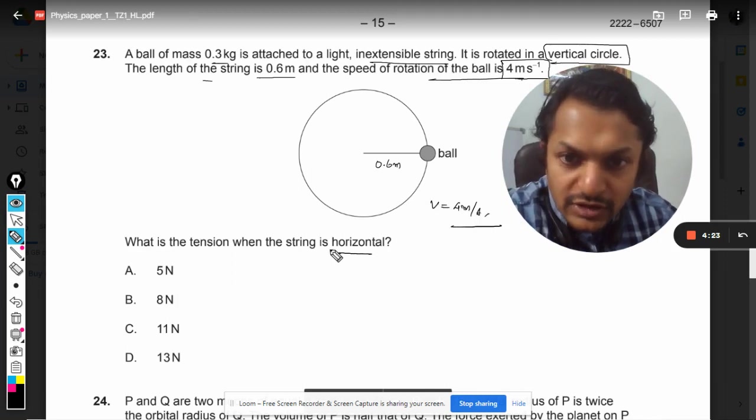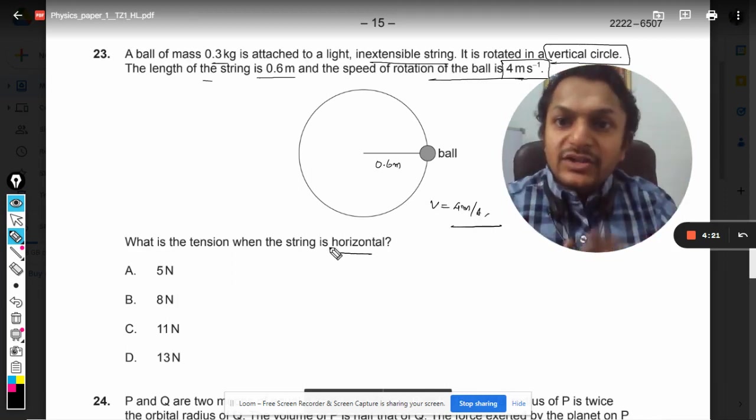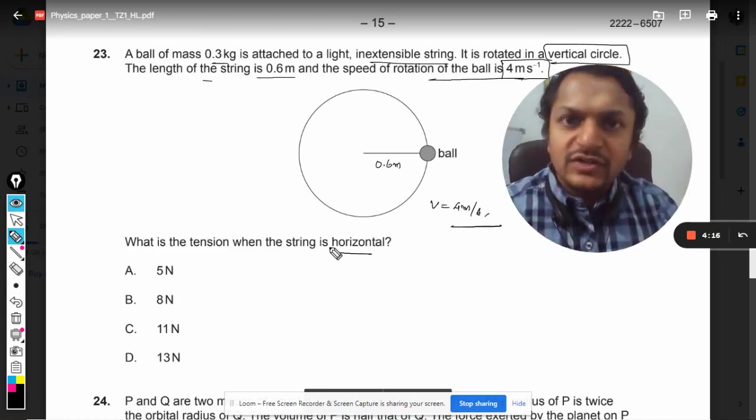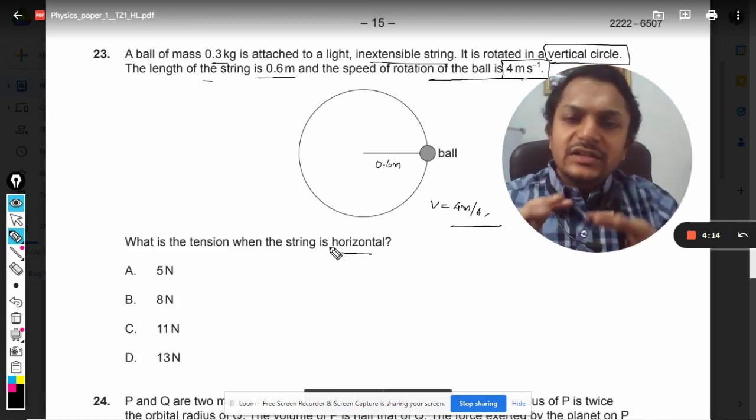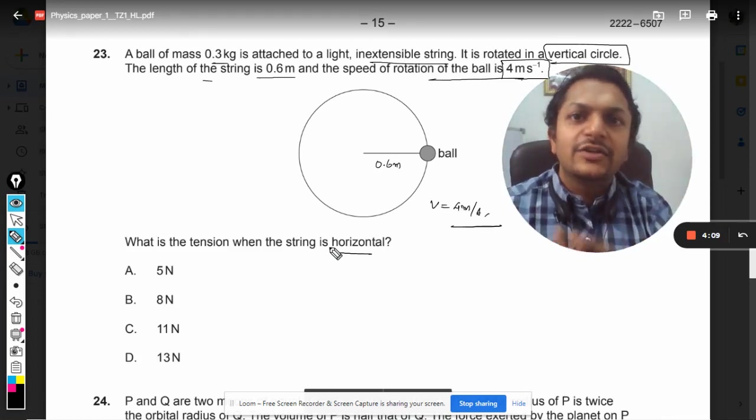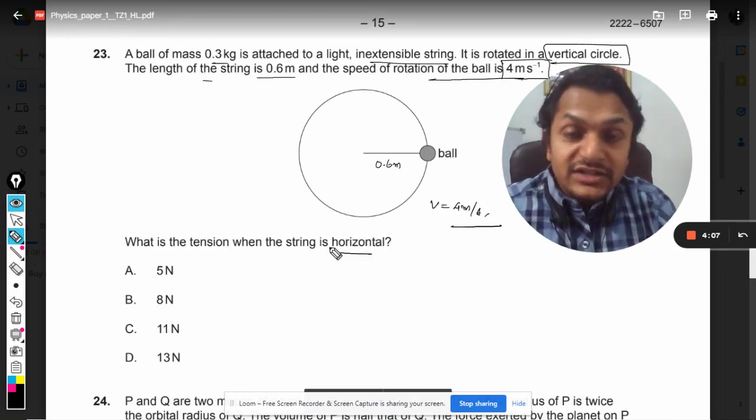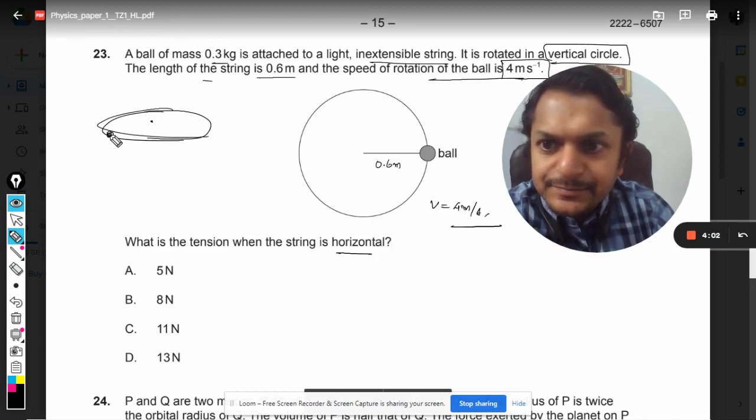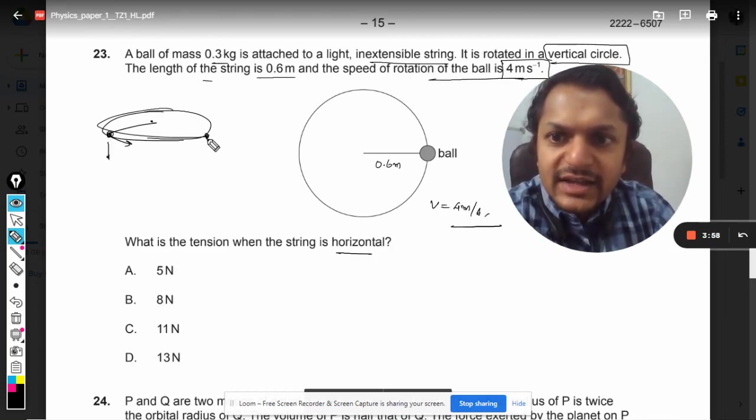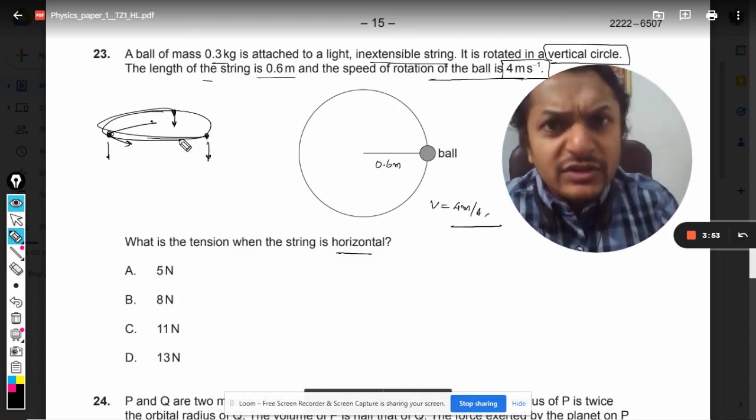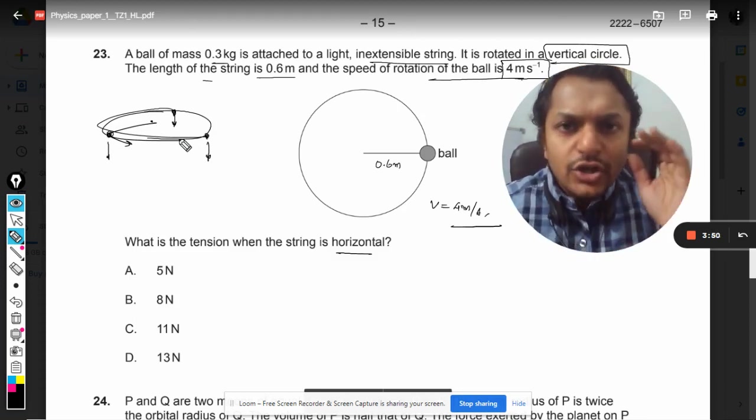My dear students, let me tell you something about horizontal circles and vertical circles. These are two different topics. When we talk about the horizontal circle, we do not consider weight because the ball is rotating horizontally. We do not consider the weight because weight is in the downward direction and it is acting downward at all positions and does not create any difference to the ball.